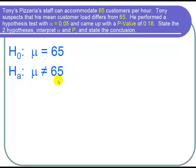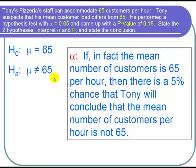Now let's understand our alpha. Our level of significance is 0.05 and that is the probability of a type 1 error, or the probability that if H naught is true, then we're going to end up rejecting H naught and accepting HA. So what that means in terms of Tony is if the mean number of customers is 65, then there is a 5% chance that Tony will conclude that the mean number of customers per hour is not 65.